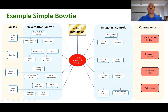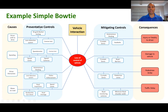On the left hand side we have the different causes that may cause a loss of control of a vehicle, and on the right hand side we have our different consequences that could result from a loss of control of a vehicle. Then we have here our area for our preventative controls — controls that prevent, or are designed to prevent, loss of control of the vehicle — and then we have an area for our mitigating controls.